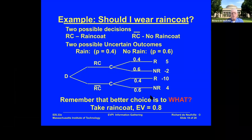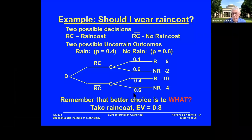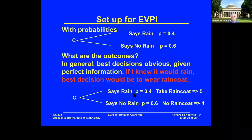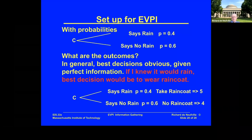Once you know the resolution of the uncertainty, the best decision is pretty obvious. If you knew it would rain, you compare 5 versus minus 10 — you take the raincoat. If you knew for sure it wasn't going to rain, you compare minus 2 and 4 — you don't take the raincoat. So you'd have a probability of 0.4 of taking the raincoat and getting 5, and a probability of 0.6 of not taking the raincoat and getting 4. You can write down your best decisions pretty automatically.